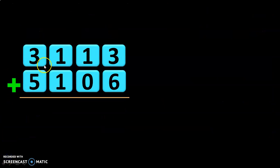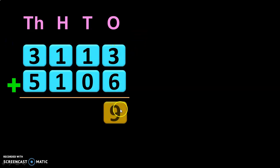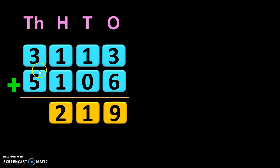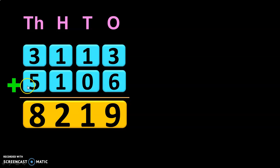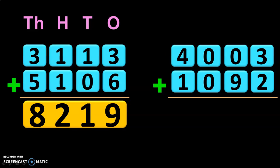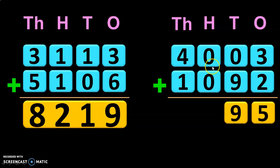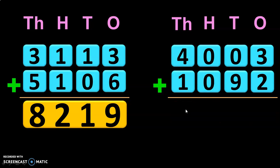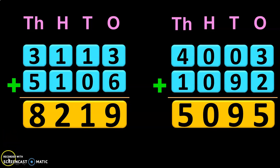Let us do some more examples. Write down the place values and start adding the digits in the ones place. 3 plus 6 is 9. 1 plus 0 is 1. 1 plus 1 is 2, and 3 plus 5 is 8. So, the sum of 3113 plus 5106 is 8219. Next example: 4003 plus 1092. 3 plus 2 is 5. 0 plus 9 is 9. 0 plus 0 is 0, and 4 plus 1 is 5. So, the sum of the two four-digit numbers is 5095.